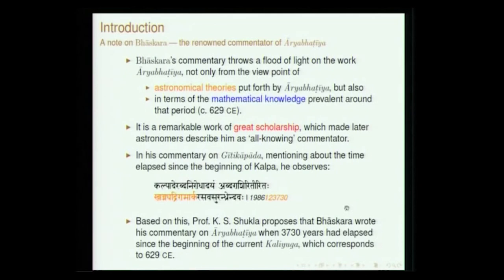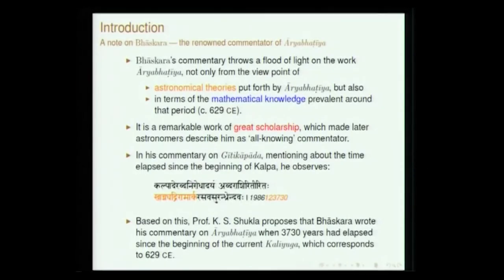Before I proceed into the text Aryabhatiya, I will say a couple of words on Bhaskara's commentary, because I will be dealing with both of them together. Bhaskara has actually written three major works. One is Aryabhatiya Bhashya as I was mentioning. The other two are sort of independent works, but Bhaskara describes them as Aryabhata karma nibandhana — primarily an exposition on what has been described by Aryabhata. Those two works are called Lagubhaskariam and Mahabhaskariam. These three works together throw a lot of light on the mathematical knowledge and astronomical theories present around that period.